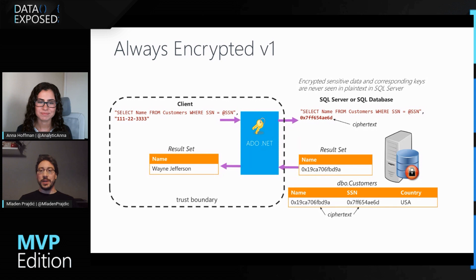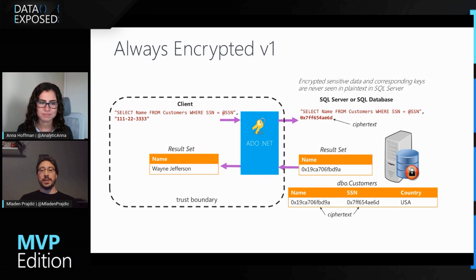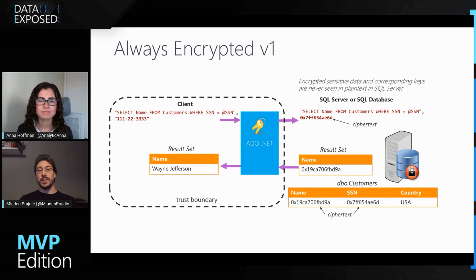Always Encrypted v1 was introduced in SQL Server 2016. What it does is simple: you have a client which runs on a modified data driver, and you send the data unencrypted to the driver, and the driver encrypts the data, sends it encrypted to the SQL Server, where it gets stored or queried. Once you get the result, the still-encrypted data comes back from the server to the client, and then the client decrypts that data. The actual key for decryption is never sent to the SQL Server. So even if you have sysadmins on SQL Server, they cannot decrypt the data because they don't have the key.